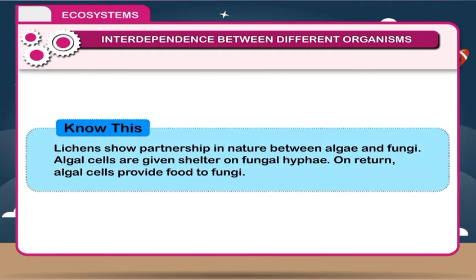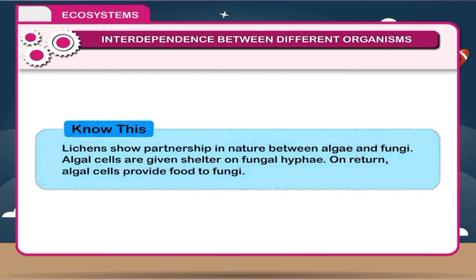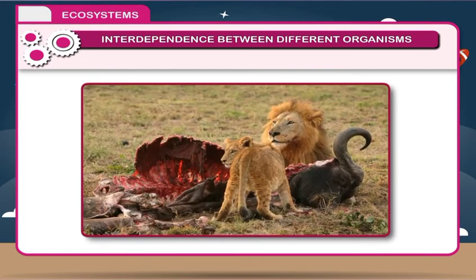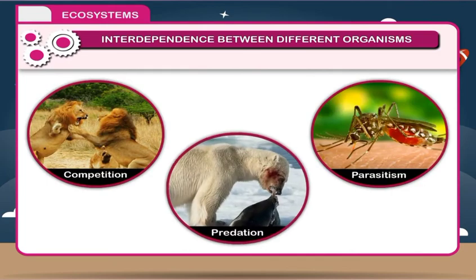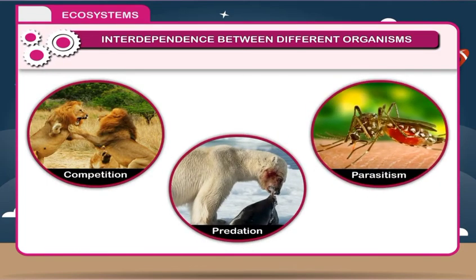Know this: Lichens show partnership in nature between algae and fungi. Algal cells are given shelter on fungal hyphae. In return, algal cells provide food to fungi. On the other hand, when members of one population compete for food or depend on others in a harmful way, it is called a negative interaction. Examples of negative interactions include competition, predation, and parasitism.